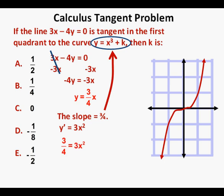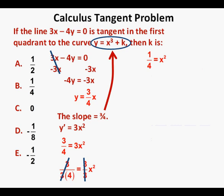Now we set the slope from our line, which is 3/4, equal to 3x squared. To solve for x, we divide both sides by 3, so we have 1/4 equals x squared. Solving for x by taking the square root of each side, we have x equals plus or minus 1/2. Because we're in the first quadrant, we can ignore the negative value, so we're left with x equals 1/2.